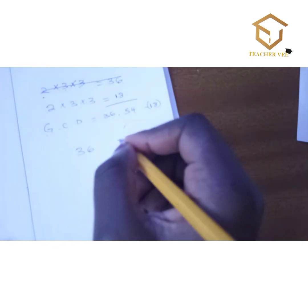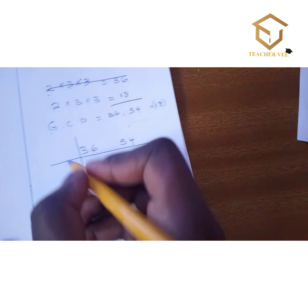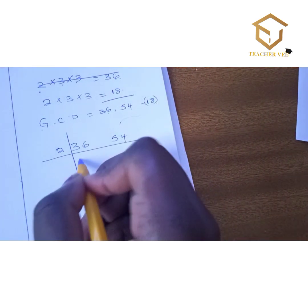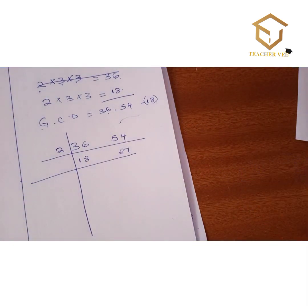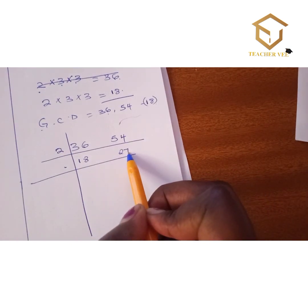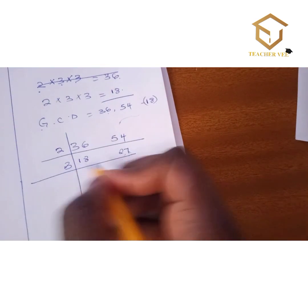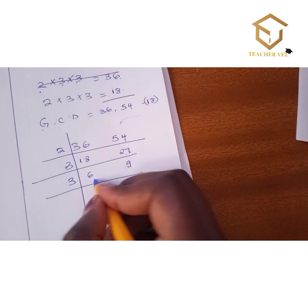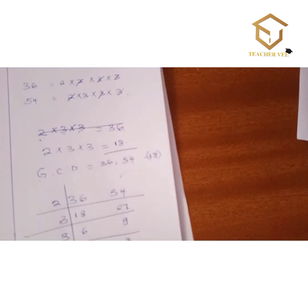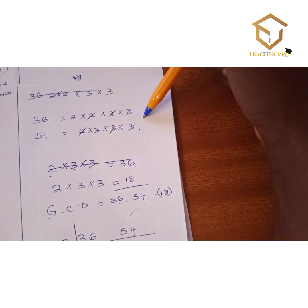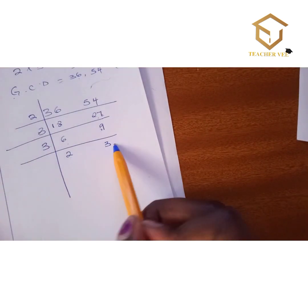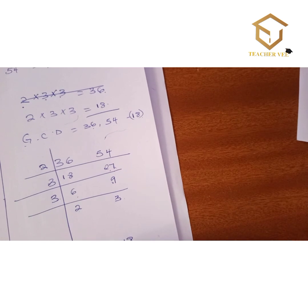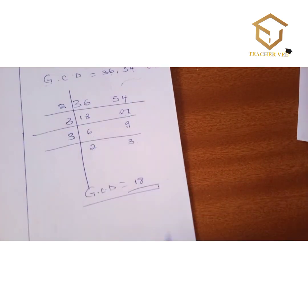We can also find the GCD using a division table. Write 36 and 54 in the table. Divide both by 2: get 18 and 27. Since 2 does not divide 27, divide both by 3: get 6 and 9. Divide both by 3 again: get 2 and 3. These remaining numbers share no common factor, so the GCD is 2 × 3 × 3 = 18. The GCD of 36 and 54 is 18.